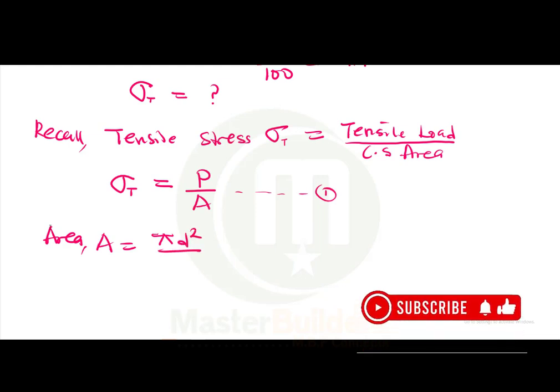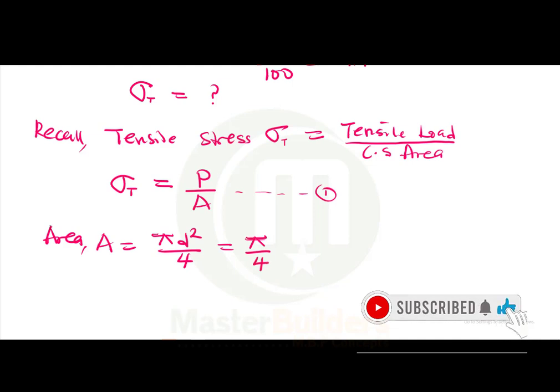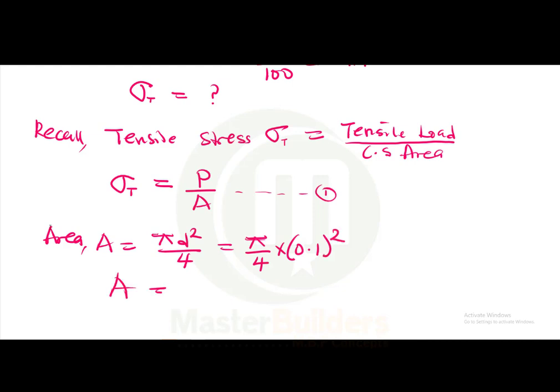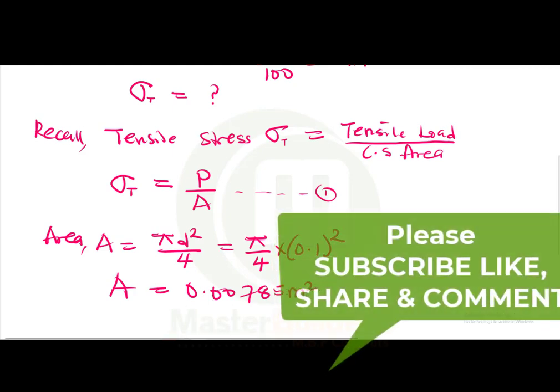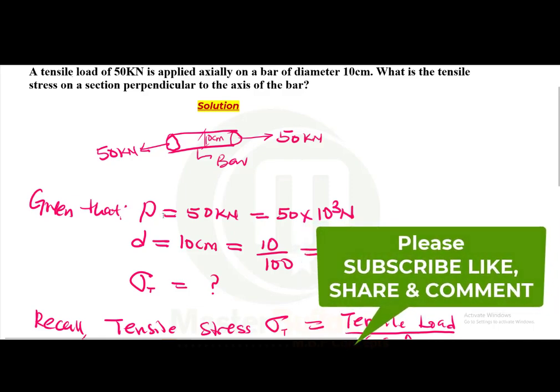And this would give us pi over 4 multiplied by 0.1 meters squared. If we divide pi by 4 and then multiply the outcome by the square of 0.1, the area is 0.00785 meters squared. So this is the area.